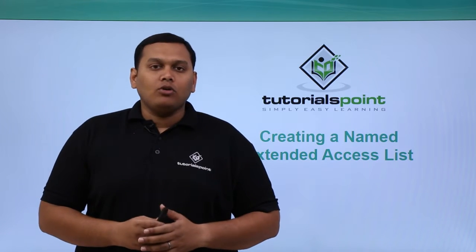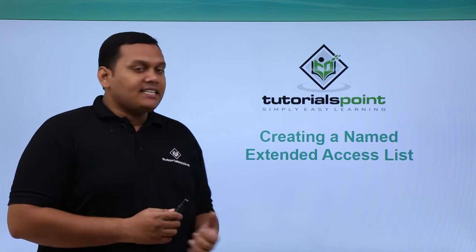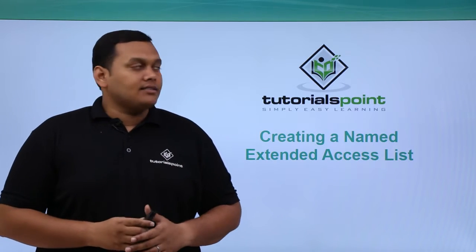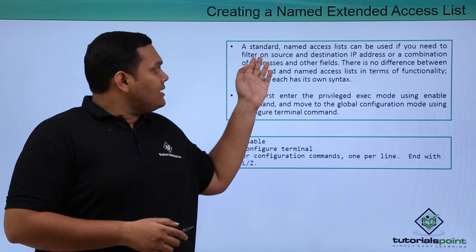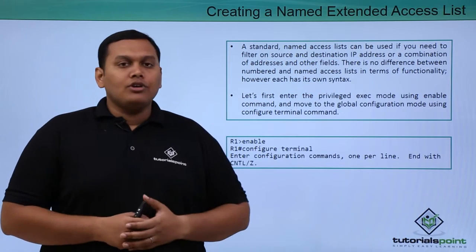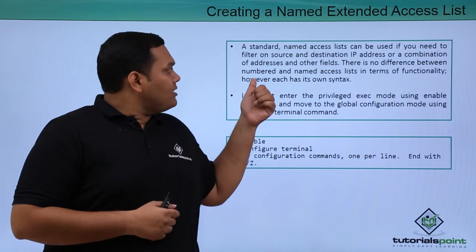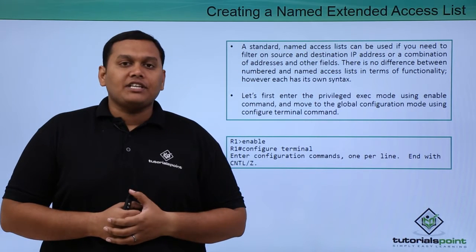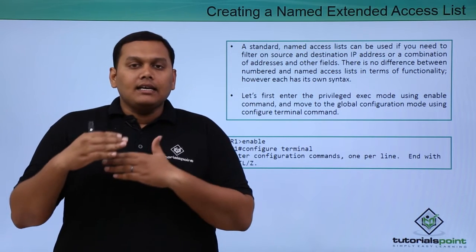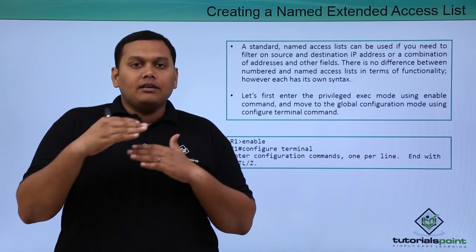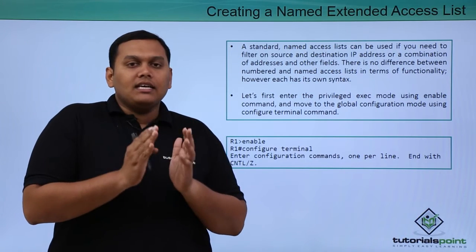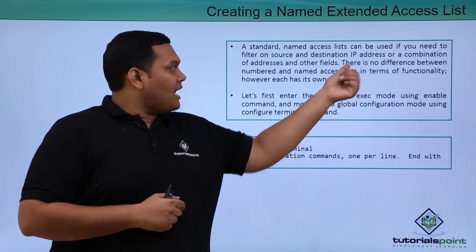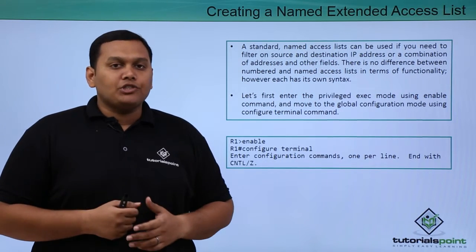In this video, we are going to discuss creating a named extended access list. A standard named access list can be used when we need to filter based on source and destination IP addresses. Named differs from numbered, but here in named, the filter applies to packets based on the source and destination IP address, or a combination of both.